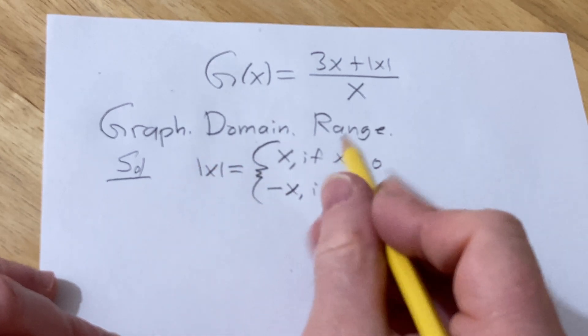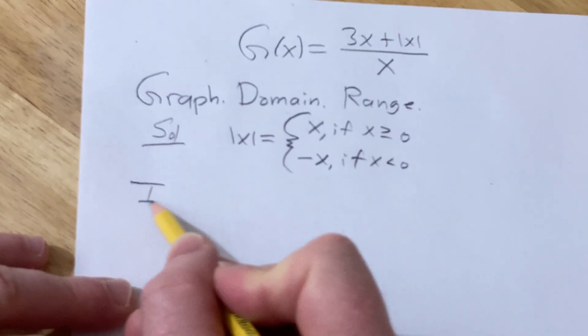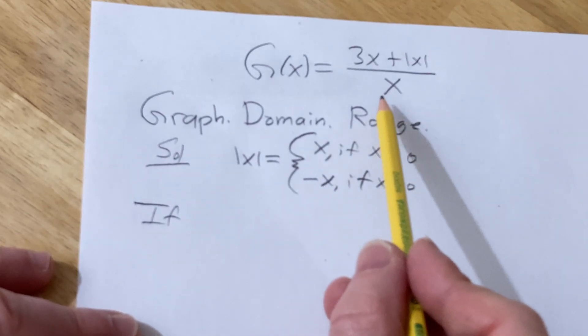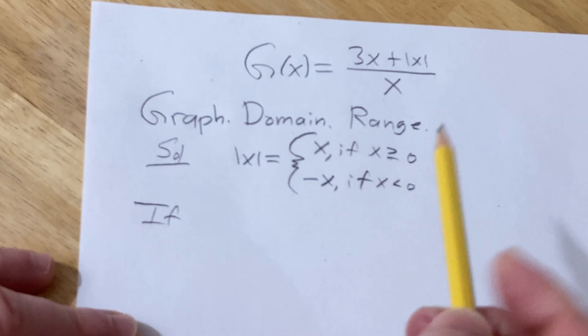We're going to use this information to graph this. First note that x can't be 0, so we're only going to consider the case when x is positive or negative.